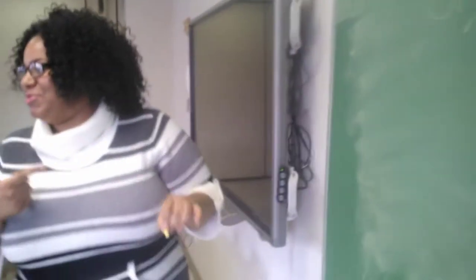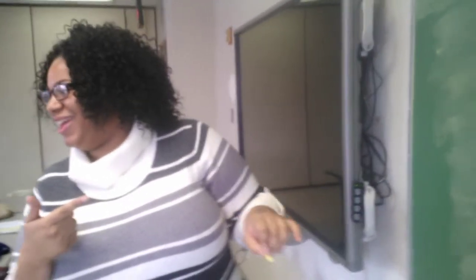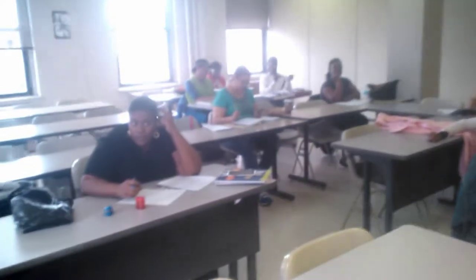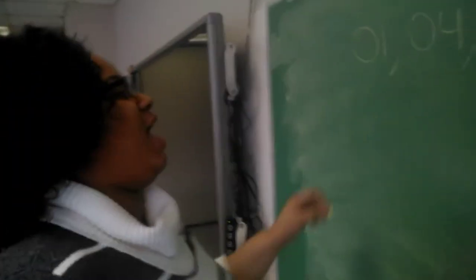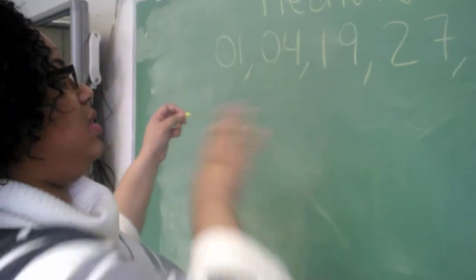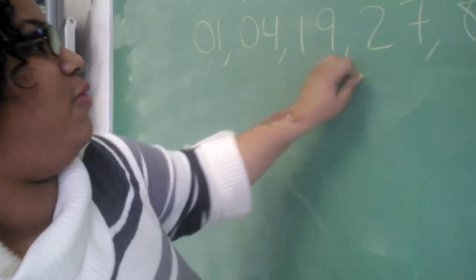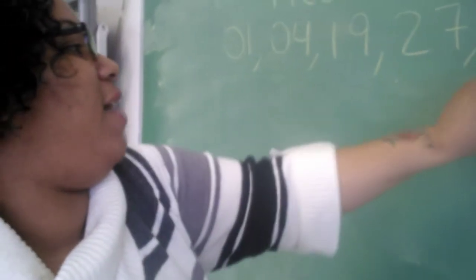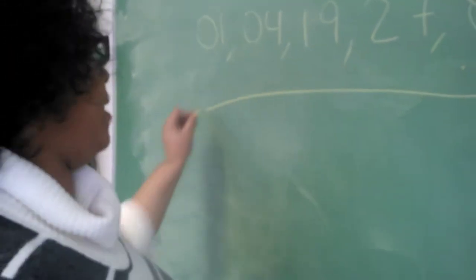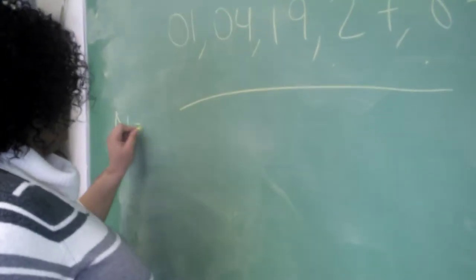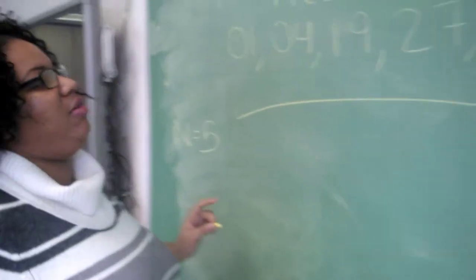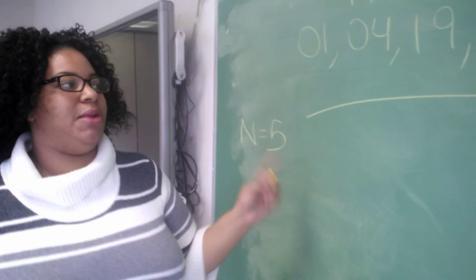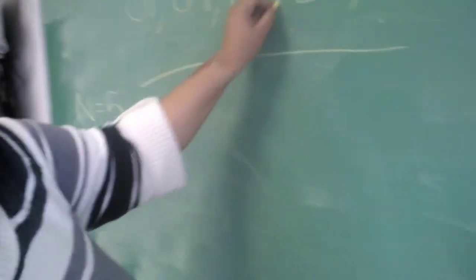First off, anybody know where those numbers come from? Your birthday. Yeah. Not my real age. All right, so we have a data set. First we're going to count our data set: 1, 2, 3, 4, 5. Being that we have 5 numbers, N equals 5, we know that our median is going to be directly in the middle, which will be 19.